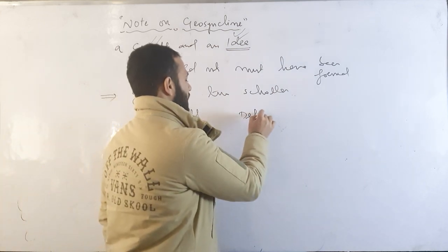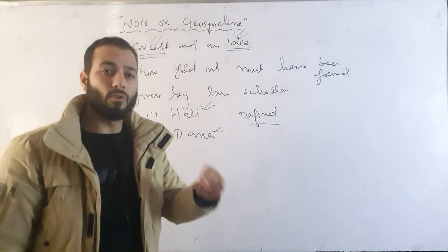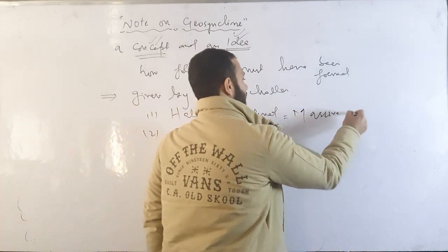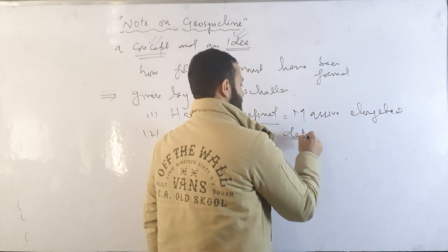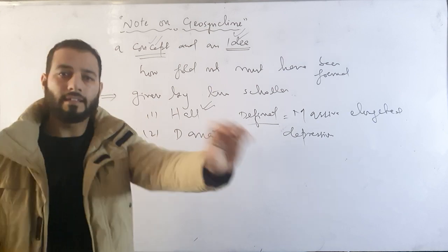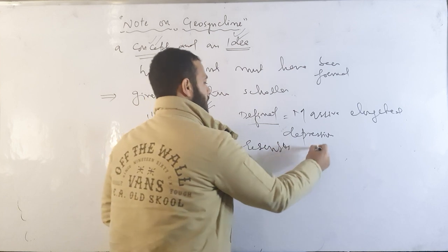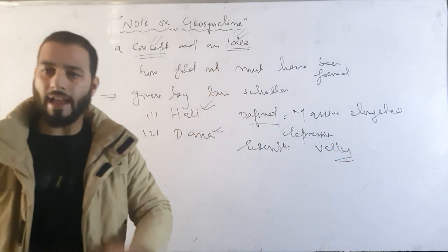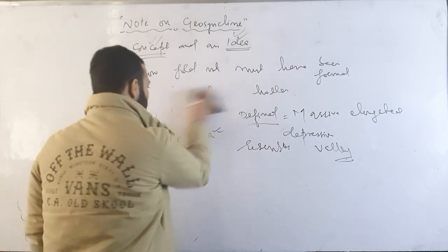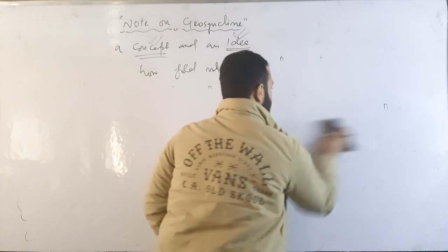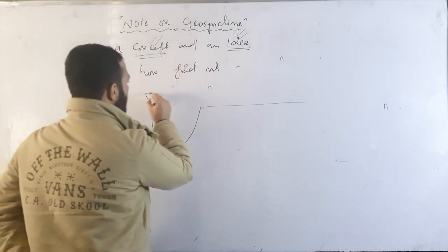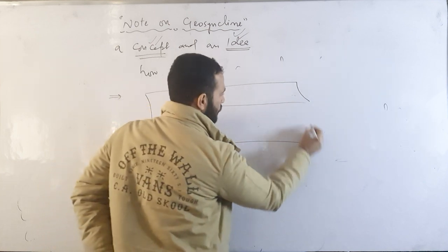Both Hall and Dana defined it as a massive elongated depression which resembles a valley. If I make a diagram, we can understand it in a more perfect way — it is a massive elongated depression.